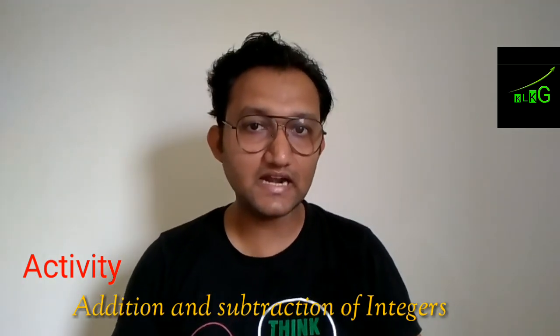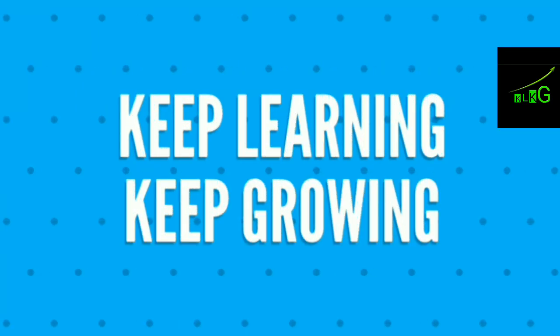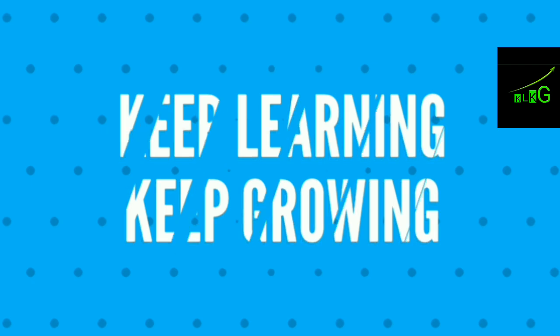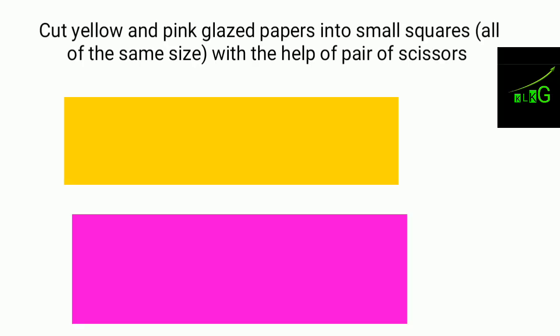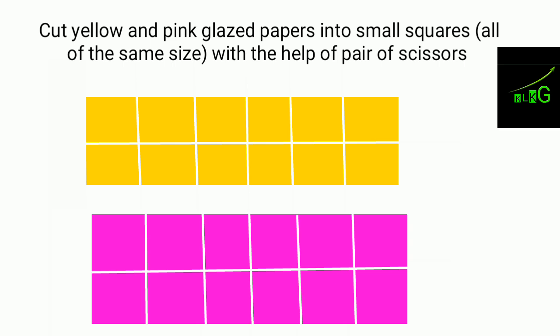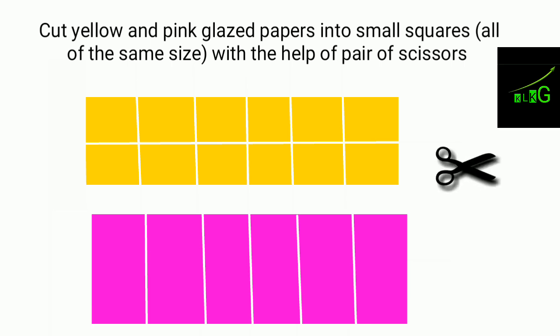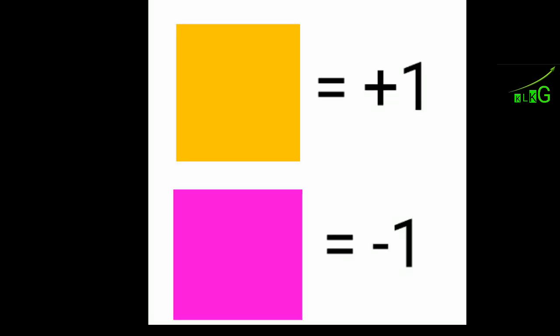Let us start our learning session. Cut yellow and pink glazed paper into small squares — all should be the same size — with the help of a pair of scissors. Yellow paper represents plus one, and pink paper represents minus one.